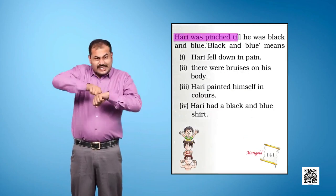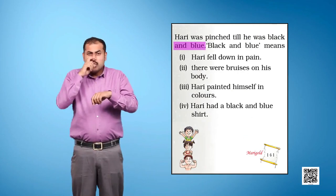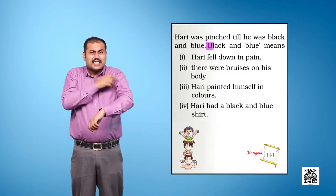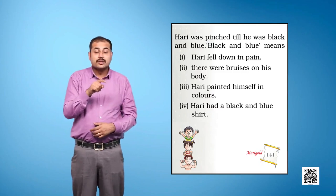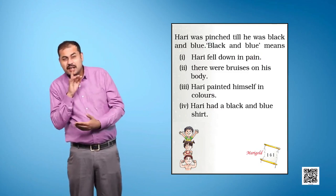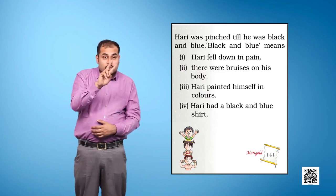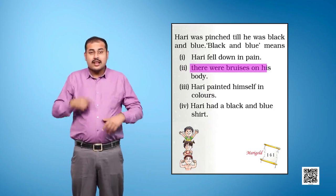Hari was pinched till he was black and blue. Black and blue means: One, Hari fell down in pain. Two, there were bruises on his body.